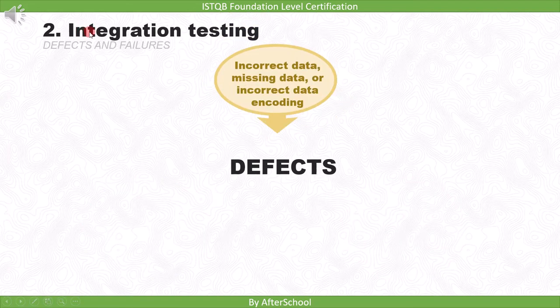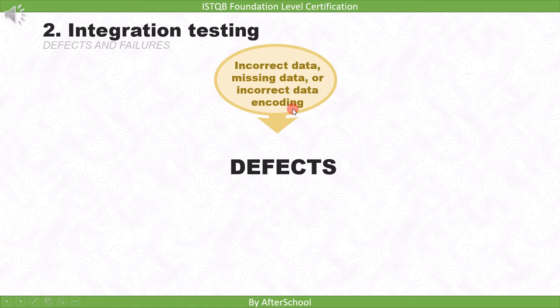Now let's move to integration testing. The first defect type is incorrect data, missing data, or incorrect data encoding. Since during integration testing, data is transferred from one module to another, we can find incorrect data, missing data, or incorrect data encoding.